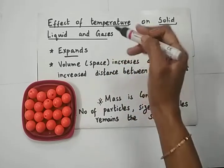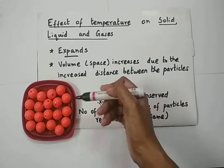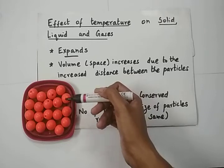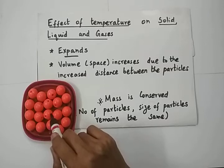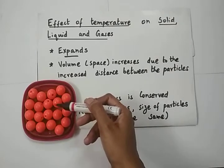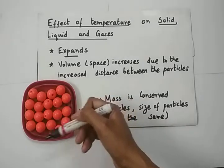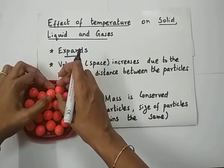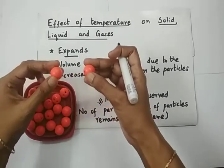What happens when you increase the temperature, that is by heating? What happens to the molecules or the particles of the materials? We know that all materials are made up of molecules, which are in turn made up of atoms. Here we have a representation of the molecules of solids — say ice. Water molecules are represented here with the beads. When you supply heat, the particles, the molecules, the water molecules, they will gain energy. The heat energy will be converted to kinetic energy.